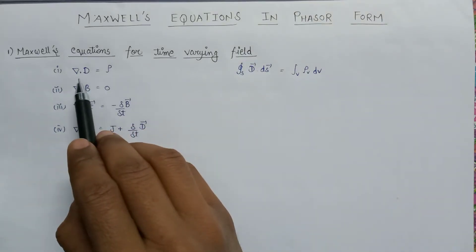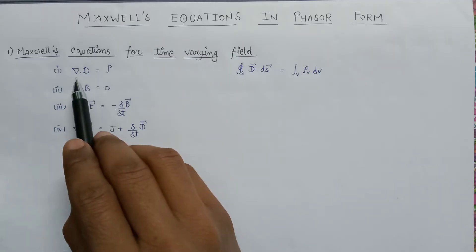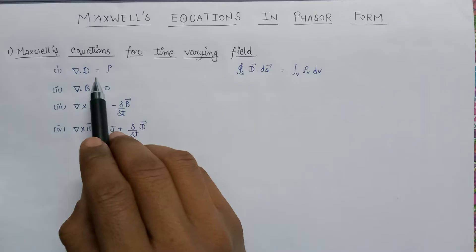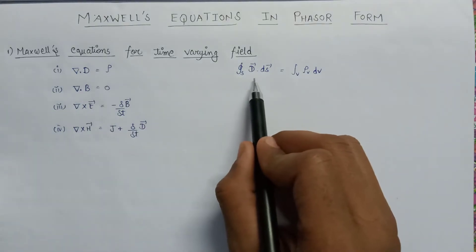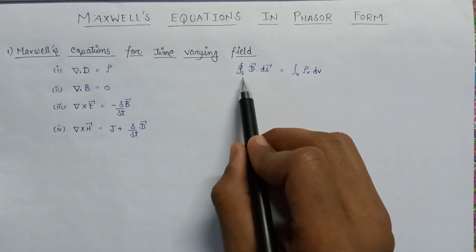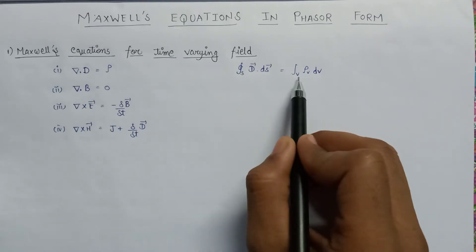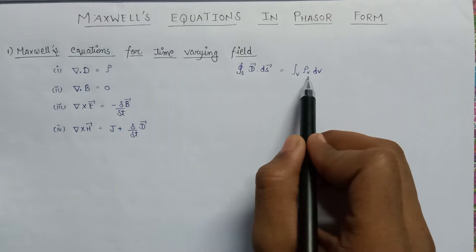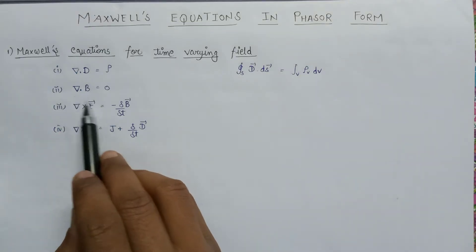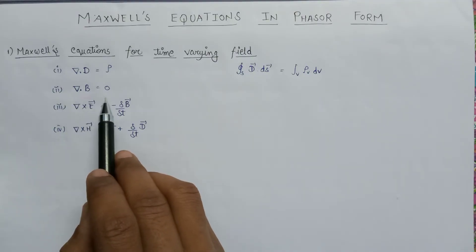The first equation given by Maxwell is del dot D equals rho in the differential form. In the integral form it is: integration over a closed surface of D dot dS equals integration over volume of rho_v dV. Maxwell's second equation is del dot B equals zero.